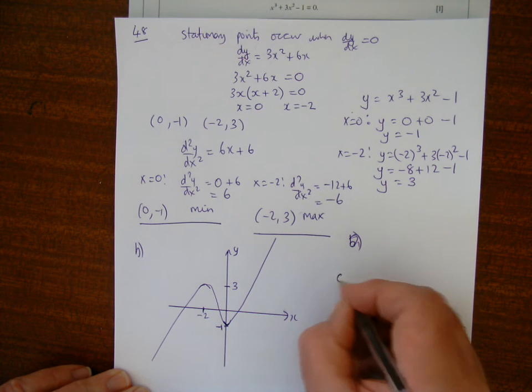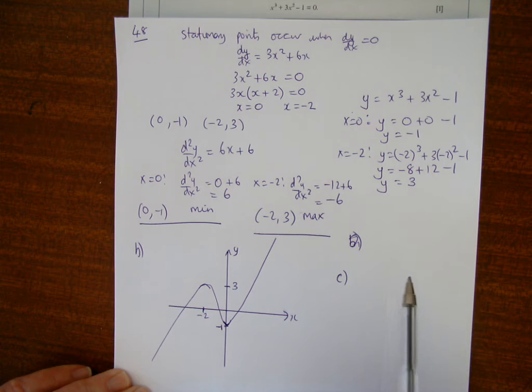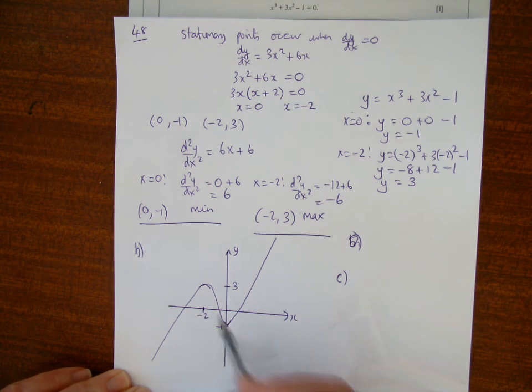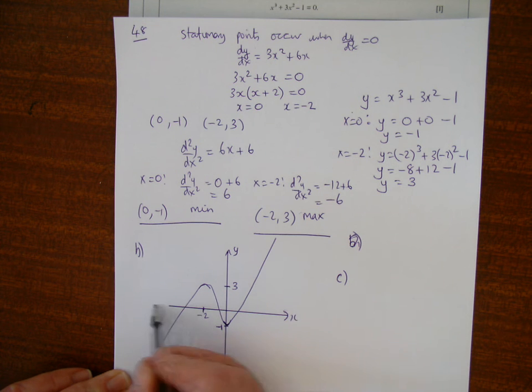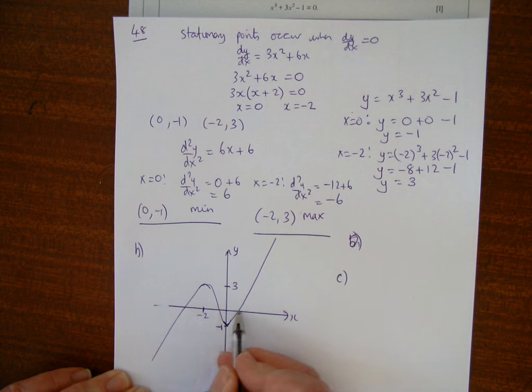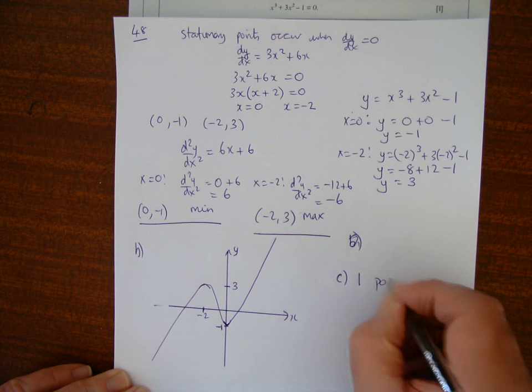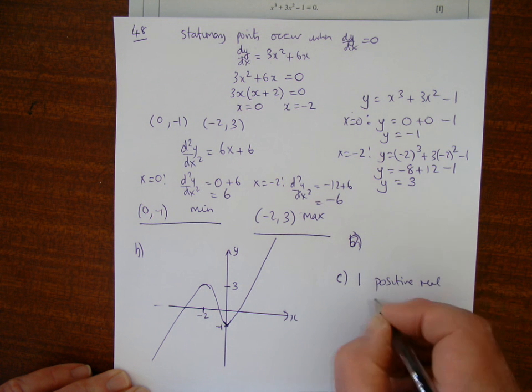Part c: write down the number of positive real roots of x³ + 3x² - 1 = 0. Where does the curve equal zero? Where it crosses the x-axis. It crosses at three places, but only the final one is positive, so there is one positive real root.